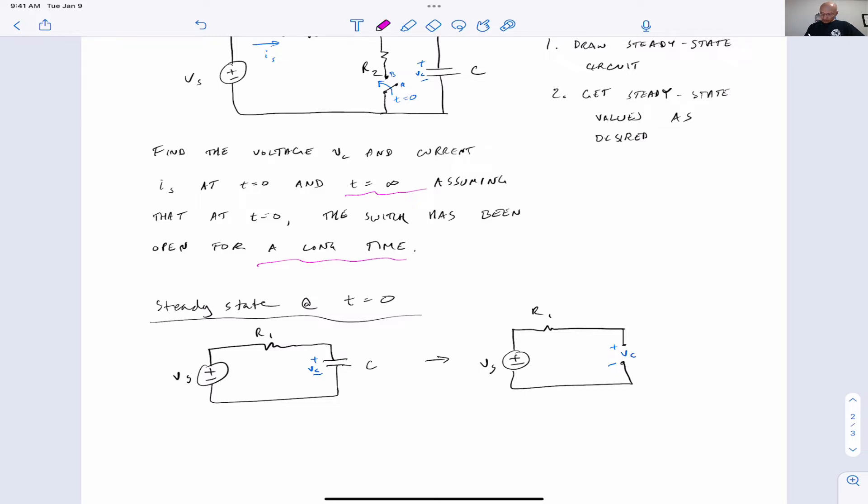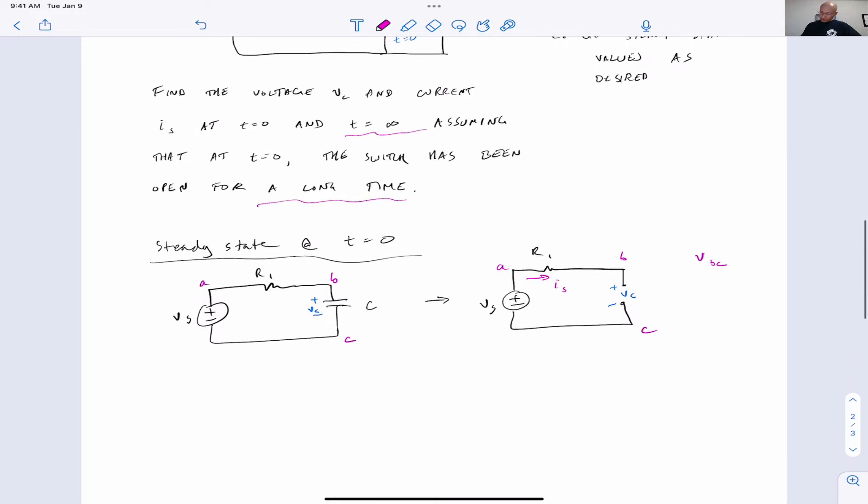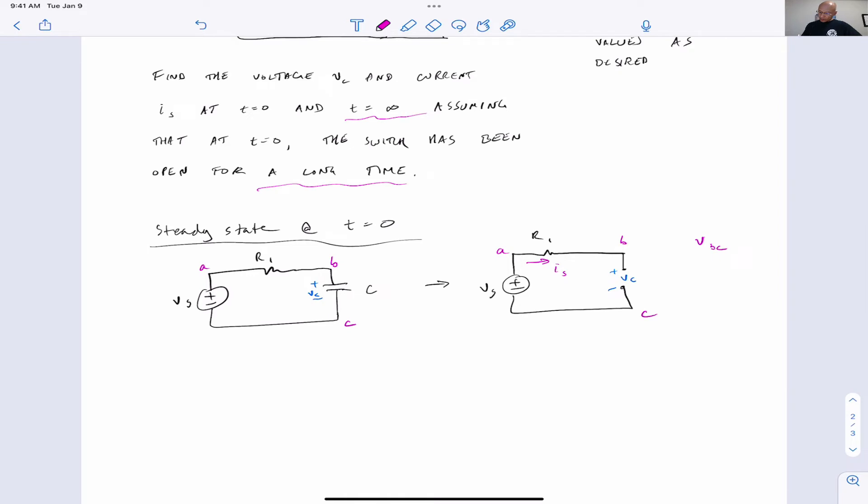And we'll just designate the nodes ABC. So what we really want is the voltage VBC, and we want this current IS. Well, here, it's already apparent that IS equals zero because it can't flow at all in the steady-state circuit.